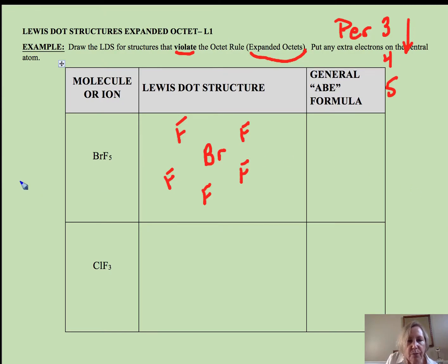So I have one bromine - it brings seven. I have five fluorines - they each bring seven. I have 42 electrons to play with. So first thing I'm going to do is make my bonds: 2, 4, 6, 8...